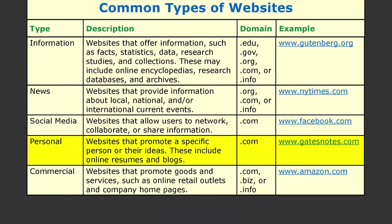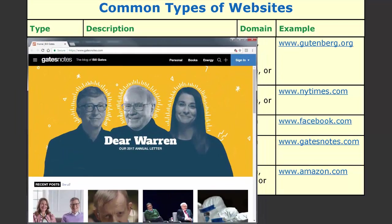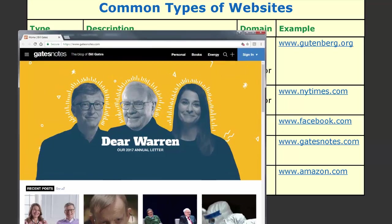Then there are personal websites. These websites promote a specific person or their ideas, and include online resumes and blogs. Their typical domain is .com. An example of a personal website is Bill Gates' blog, which you can find at www.gatesnotes.com.